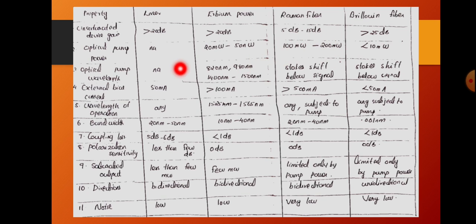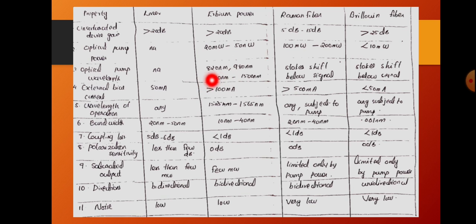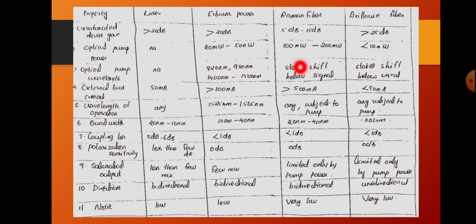Next we compare optical pump wavelength. For the laser there is no need for an optical pump, so it is not applicable. In the case of the erbium fiber amplifier, the optical pump wavelengths are 820 nm, 980 nm, 1400 nm, and 1500 nm — it requires different pump signals at different wavelengths.